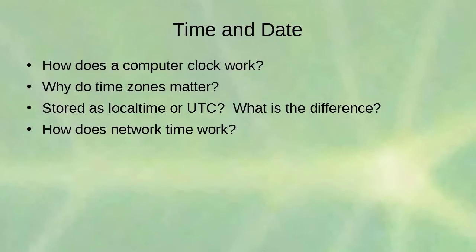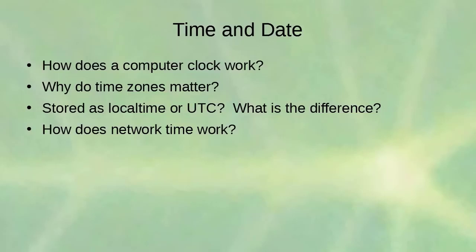During installation you need to set the correct time and date. Computer clocks use quartz crystals — when electricity passes through quartz it oscillates at a given frequency, and the computer counts those oscillations to track time. However, not all quartz crystals are perfectly equal, so clocks drift and network time is used to correct them. Time zones complicate things further: not all time zones differ by the same number of minutes from each other.